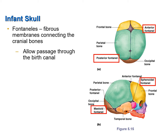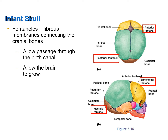The purpose of the fontanelle is to allow compression and molding of the skull during the birthing process, which facilitates passage through the birth canal. Also, the brain of the infant is growing very quickly, and the fontanelles allow expansion of the cranial cavity to facilitate brain growth. The fontanelles slowly calcify such that at 24 months after birth, they are completely calcified. After that, there is still some expansion of the cranial cavity as the cranial bones can continue to grow. Fontanelles are also commonly referred to as soft spots.